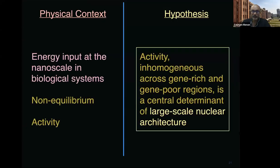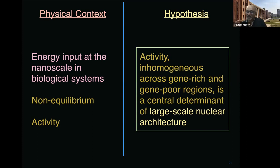The physical context involves energy input — this is out of equilibrium. Activity is an important word. The hypothesis is that it's activity, which is inhomogeneous across gene-rich and gene-poor regions, that determines at a fundamental level the large-scale nuclear architecture. You add in confinement and all these other things — they're important parts of the description. But to really be predictive, you need to account for activity that is not the same across gene-rich and gene-poor regions. That's my hypothesis.